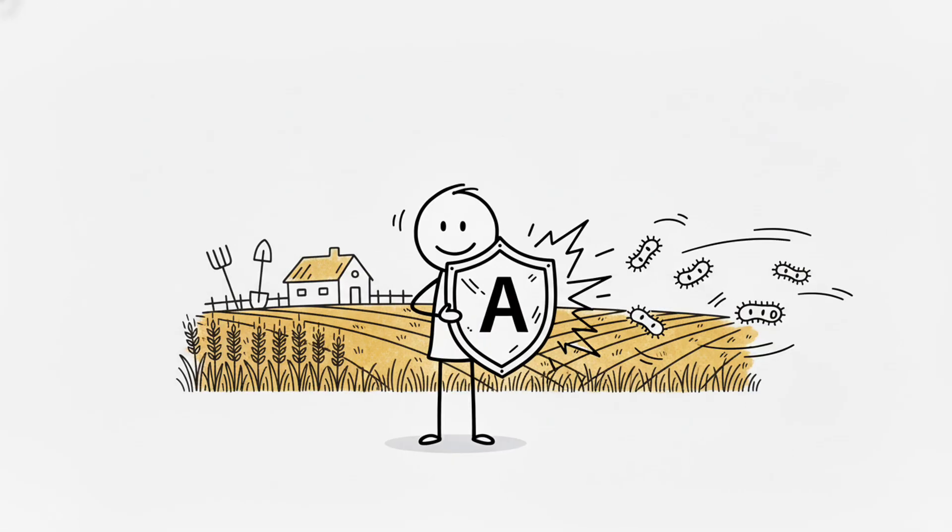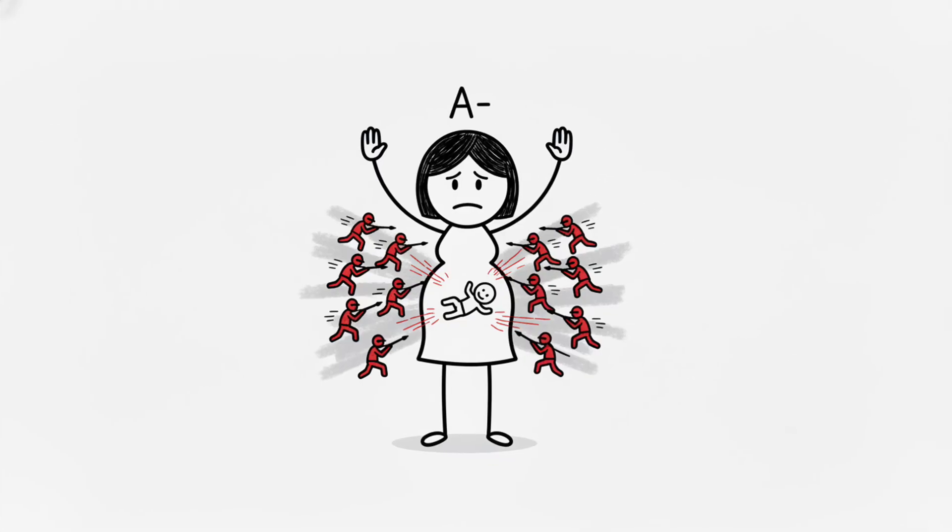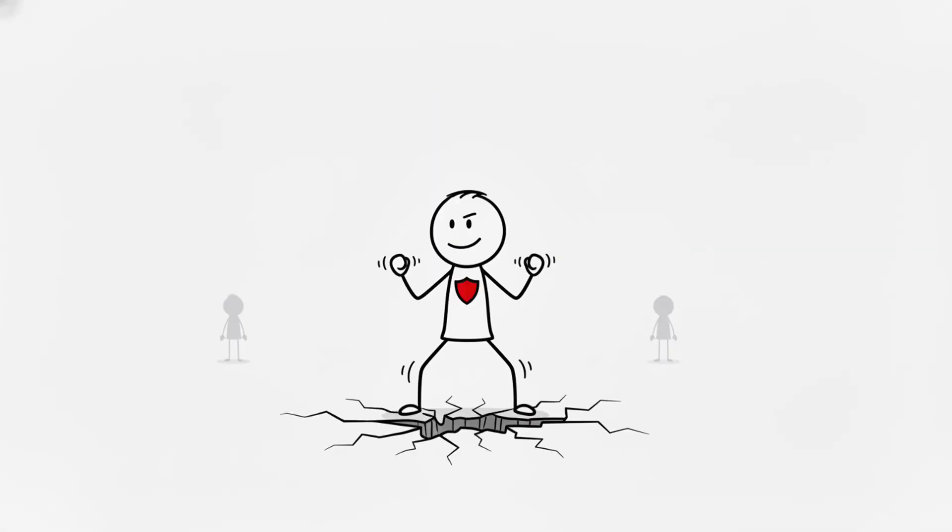Like A-positive, you carry the immune strengths of ancient farmers. But you also face the same reproductive dangers as O negative. An A-negative mother's body can attack her RH-positive baby if untreated. You're rare, resilient, but constantly fragile.